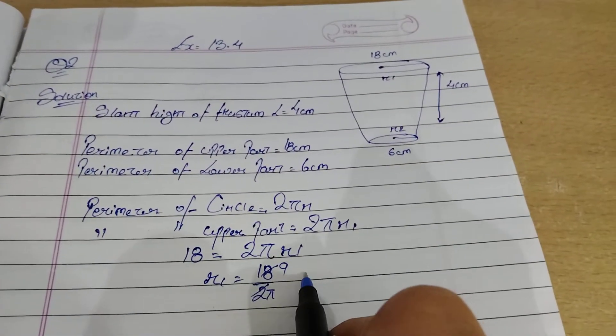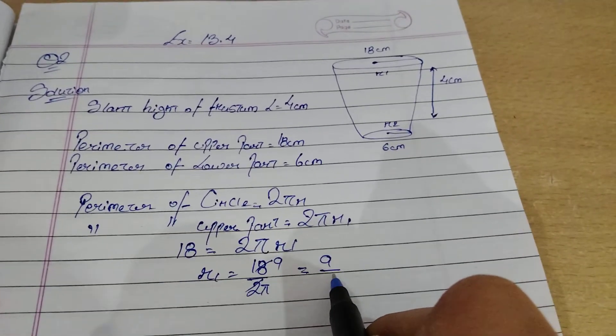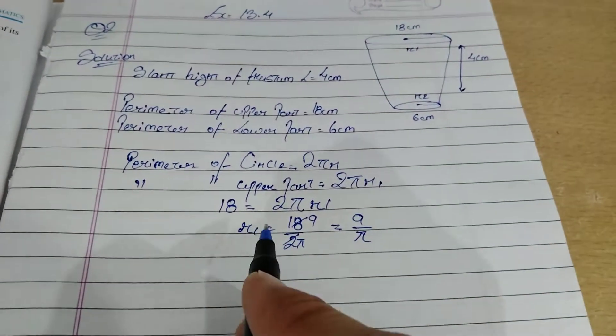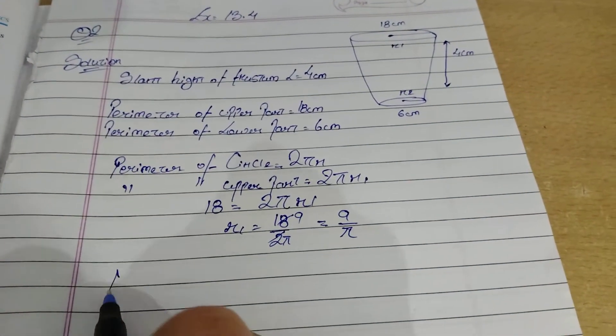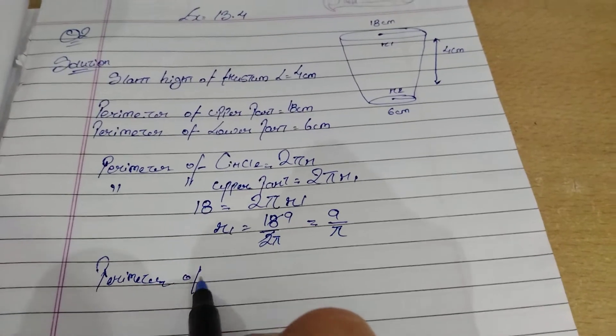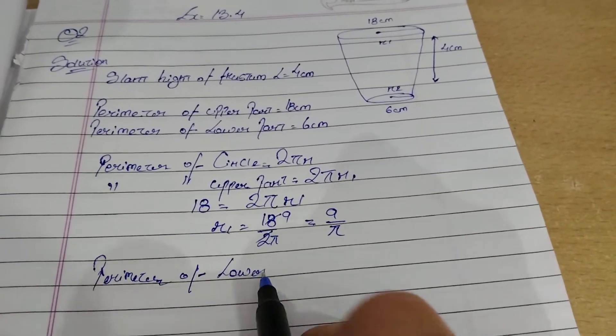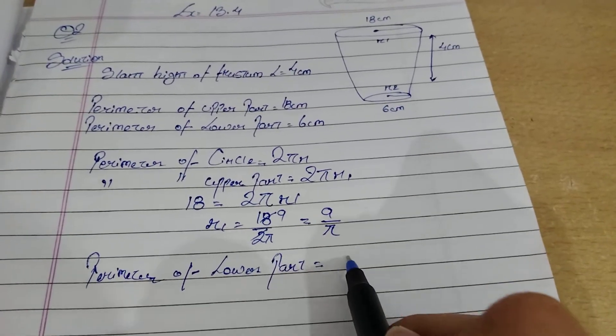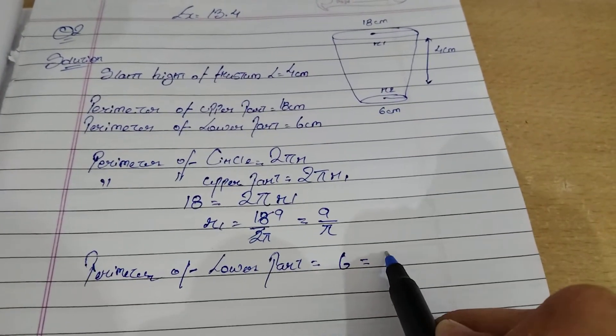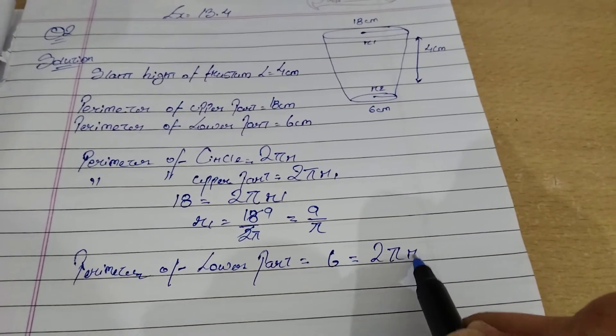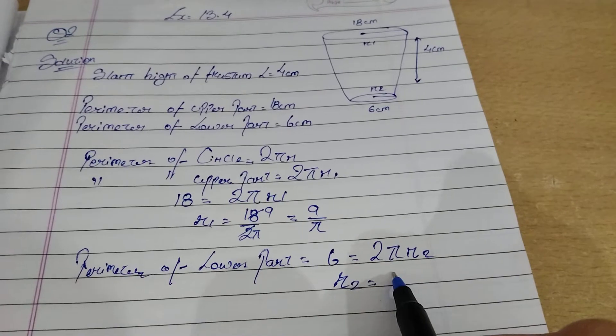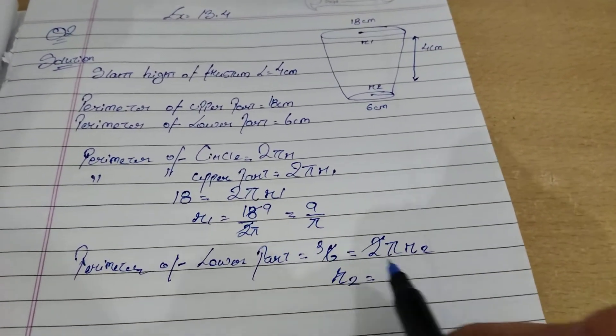Similarly now we will do for the lower part. Perimeter of lower equals to 2πr2. So 6 equals to 2πr2, so r2 equals to 3 by π. So r2 is 3 by π.